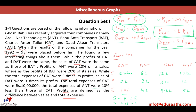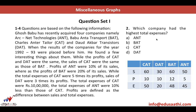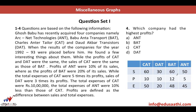Question 1: Which company had the lowest sales? Comparing the sales figures, DAT had the lowest sales — the correct answer is option D. Question 2: Which company had the highest total expenses? CAT had the highest expenses. Question 3: Which company had the lowest profits? Looking at profits (ANT: 1 lakh, others higher), ANT had the lowest — option A. Question 4: Which company had the highest profits? BAT had profits of 2.4 lakhs, which is the highest.